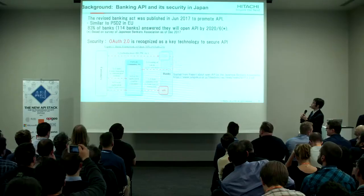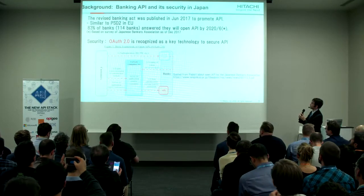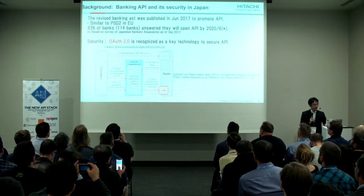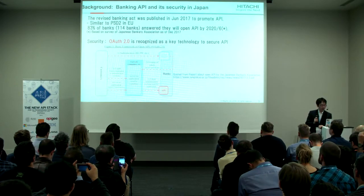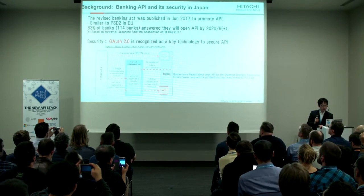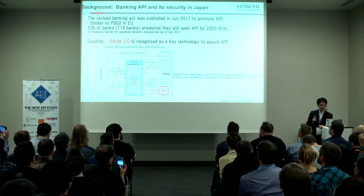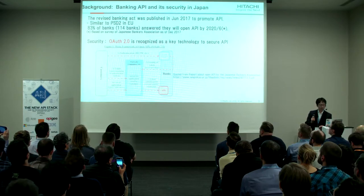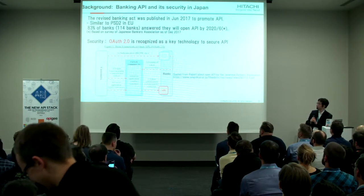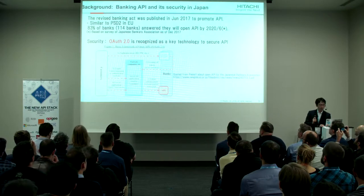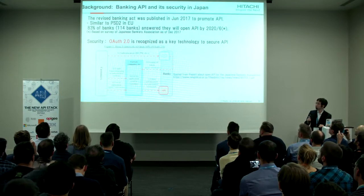This is the background of banking API in Japan. There is a regulation, and the Revised Banking Act was published last year to promote API. More than 80% of the banks will open their APIs within one and a half years.